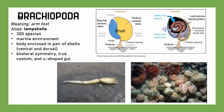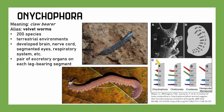We have Onychophora, known as the claw bearers, also known as velvet worms because of their velvet-like cuticle. About 200 species, found in terrestrial environments. They have a pretty well-developed brain, nerve cord, segmented eyes, and respiratory system. They are all predators. They're actually closely related to arthropods like chelicerates and crustaceans, though with different brain composition and evolution. A key difference is they have a pair of excretory organs on each leg-bearing segment. Despite appearances, these are not millipedes or centipedes.